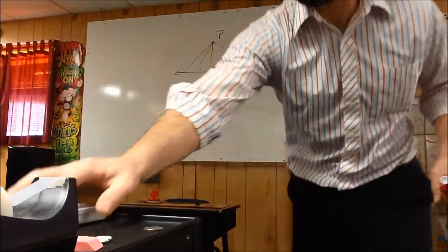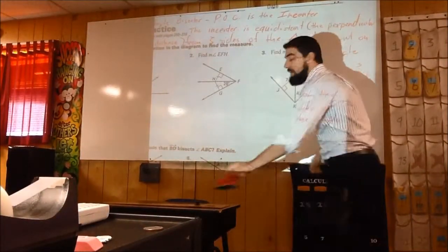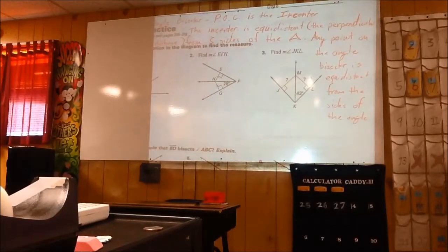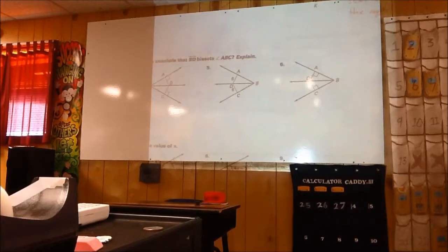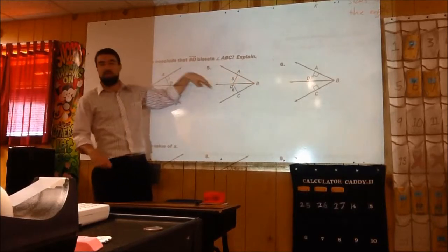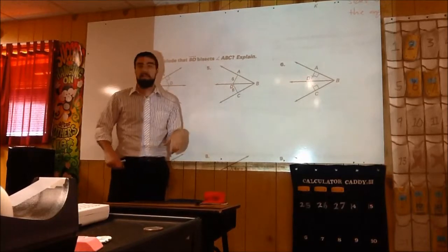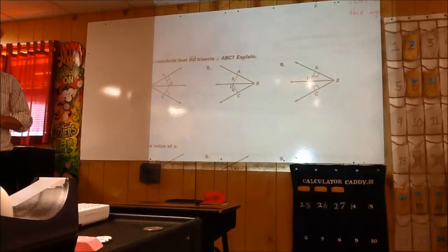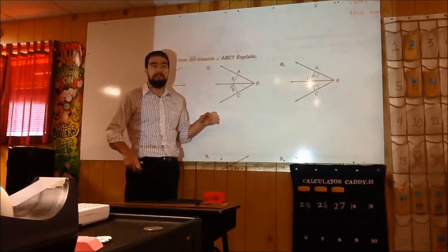When talking about a point that is equidistant from the sides, you have to know that's the perpendicular distance. If you look at number 5, it asks: can you conclude if this ray is the angle bisector? Well, this is 6 and that's 6, so those two segments are congruent. But do we know if that's the angle bisector? We don't know if that's the perpendicular distance — you have to know if that's the perpendicular distance.